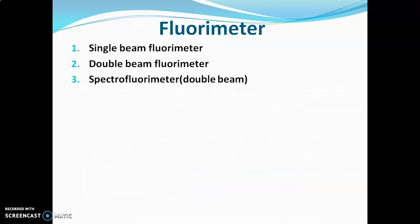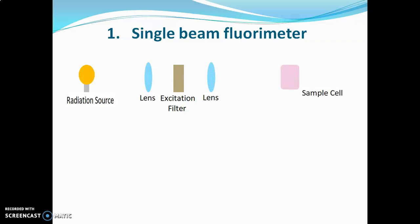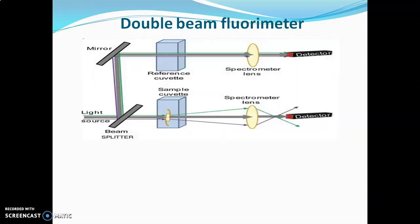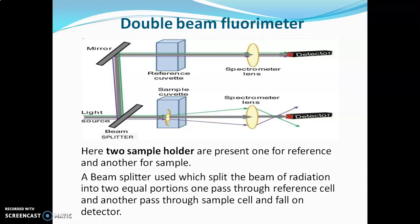There are three types of fluorimeters: single beam fluorimeter, double beam fluorimeter, and spectrofluorometer (which is a double beam instrument). The single beam fluorimeter uses a tungsten lamp and primary and secondary filters, with only one sample holder. The double beam fluorimeter has two sample holders — one for reference and one for sample — and a beam splitter divides the radiation into two equal portions, one through each cell, both falling on the detector.